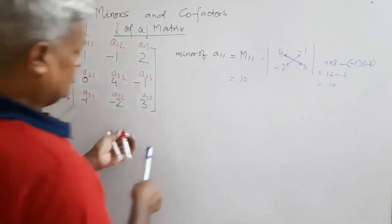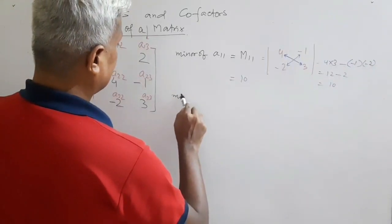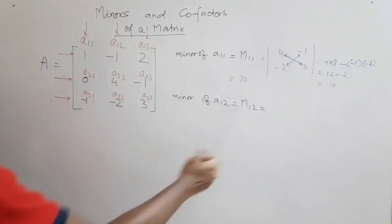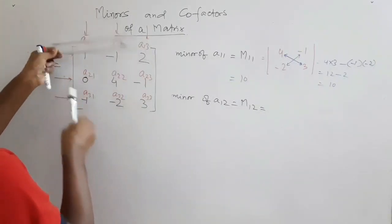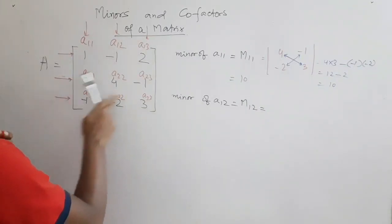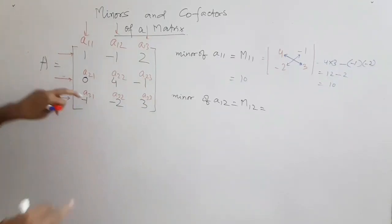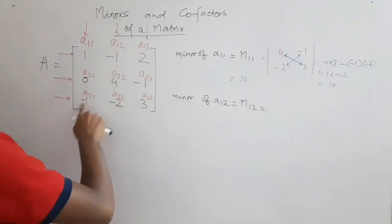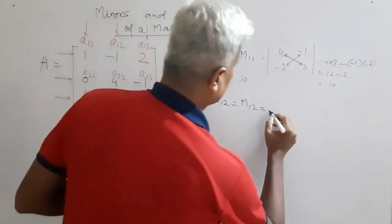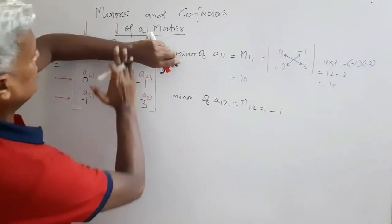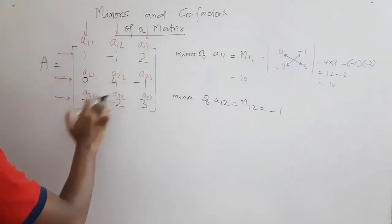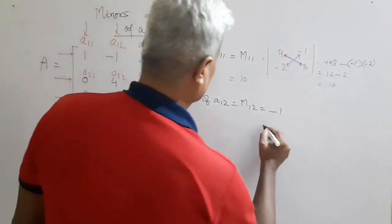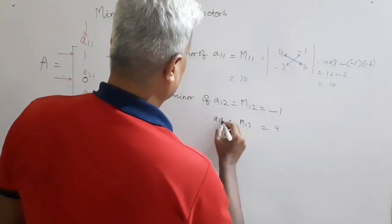For M12, cover the first row and second column, leaving 0, minus 1, minus 1, 3. Its determinant: 0 times 3 minus (minus 1 times minus 1) = 0 minus 1 = minus 1. For M13, cover the first row and third column, leaving 0, 4, minus 1, 2. Determinant: (minus 2 times 0) minus (minus 4) = 0 plus 4 = 4. So M13 is 4.